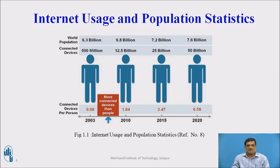This picture indicates how devices connected to the Internet have grown over the decades. In 2003, 500 million devices were connected to the Internet. In 2010, 1.205 billion devices were connected. In 2015, 25 billion devices were connected. By the end of 2020, 50 billion devices are projected to connect to the Internet. This depicts a drastic increase in connected devices, and also shows that the number of devices connected to the Internet exceeds the number of people accessing it.